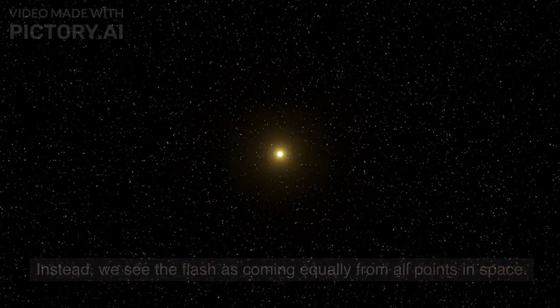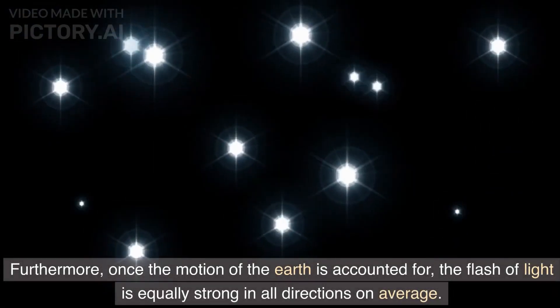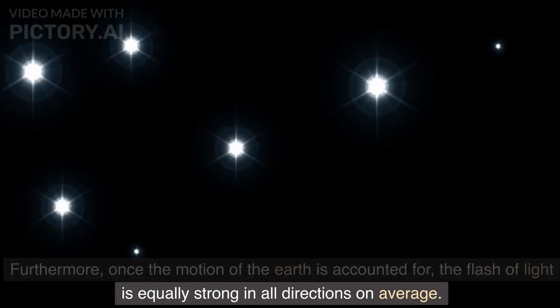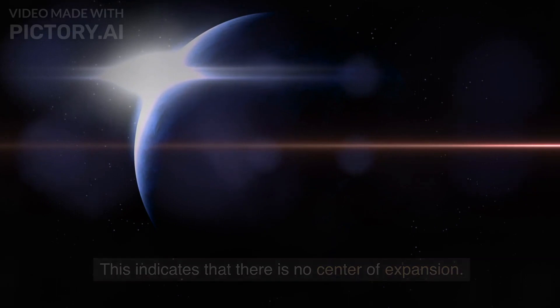Instead, we see the flash as coming equally from all points in space. Furthermore, once the motion of the Earth is accounted for, the flash of light is equally strong in all directions on average. This indicates that there is no center of expansion.